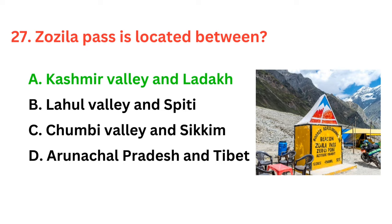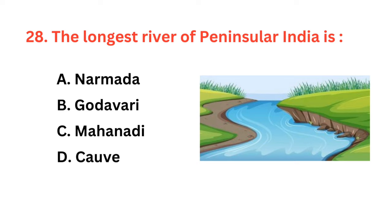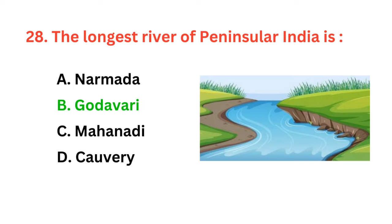The longest river of peninsular India is? The correct answer is option B: Godavari. Keoladeo Dev National Park is located in which Indian state or UT?